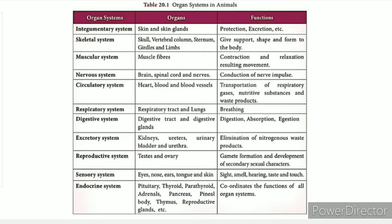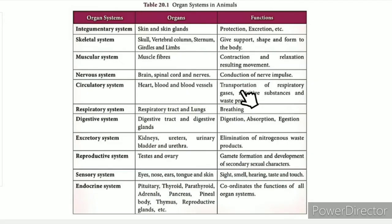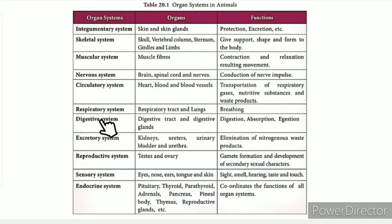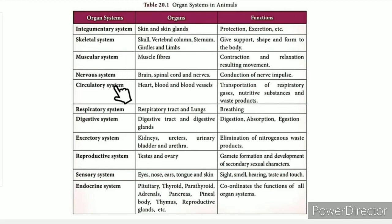The circulatory system circulates blood. Waste products such as carbon dioxide are transported through it. The organs involved are the heart, blood, and blood vessels. Its functions include transport of respiratory gases such as oxygen and carbon dioxide, as well as nutrient substances and waste products. The respiratory system includes the respiratory tract, nose, and lungs, and is responsible for breathing.